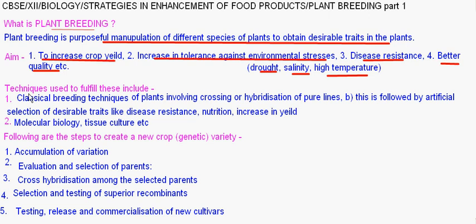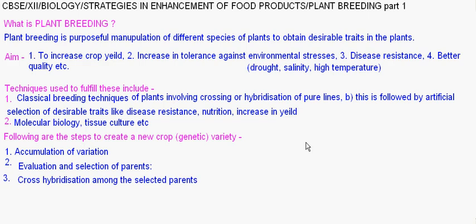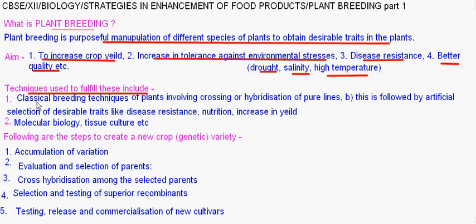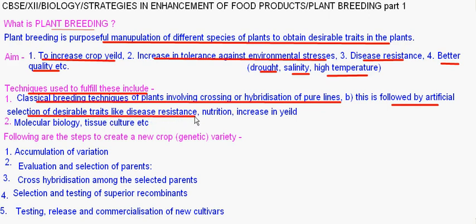The techniques used to fulfill these aims include classical plant breeding, which involves crossing or hybridization of pure lines, followed by artificial selection of desirable traits like disease resistance, nutrition, and increase in yield. Molecular biology and tissue culture techniques are also used due to improvements and discoveries in the genetic engineering field.